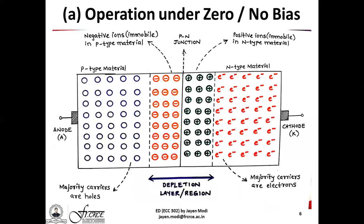For operation under zero or no bias condition, this is how an unbiased PN junction looks. You have the anode terminal and the cathode terminal, both opened up with nothing connected. The P-type material contains holes as majority carriers and a few electrons as minority carriers scattered here and there. Similarly, the N-type material contains electrons as majority carriers and a few holes as minority carriers scattered here and there. Once the P-type and N-type materials are diffused or joined together at their interface boundary, we get a PN junction.